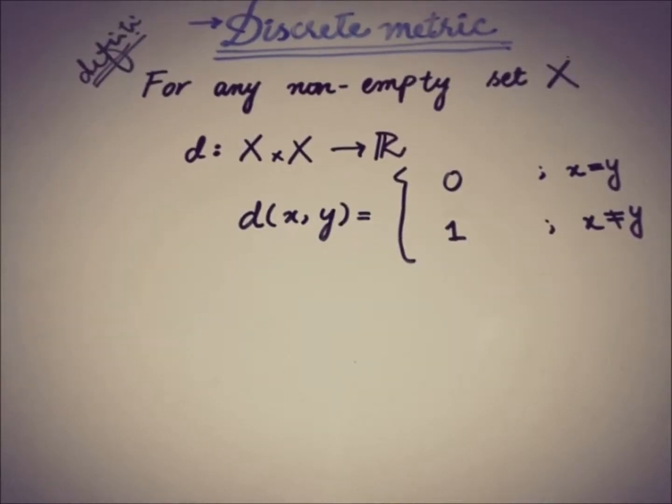The definition for the discrete metric space is we take any non-empty set X and define a function d from X×X to R where we take a pair from this, let's say x and y.